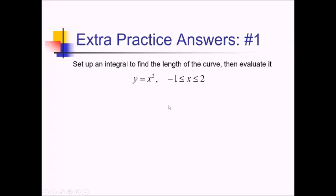For this problem, we want to set up an integral to find the length of this curve over this interval and then evaluate it. So to do this, we're going to need the derivative of y, dy over dx, which is going to be 2x, just using the power rule. And now for our integral, we have the integral from negative 1 to 2 of the square root of 1 plus dy over dx squared, all of that with a dx.